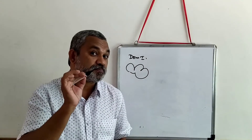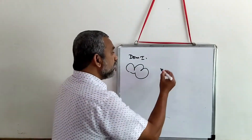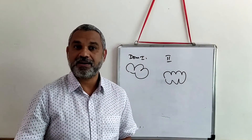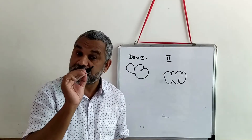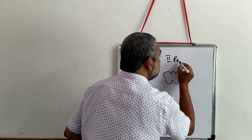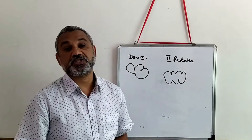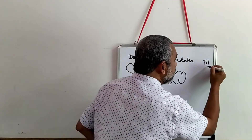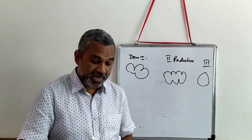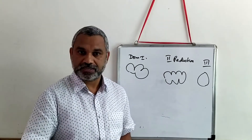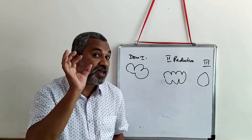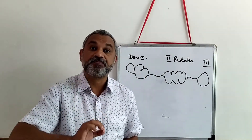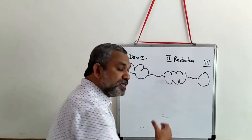Domain number one has three enzymes, and its function is to allow the substrate molecule to come in and condense them — so it is known as the substrate entry and condensation unit. Domain number two is made up of three enzymes and one protein, like ACP, and its function is reduction of the substrate molecule. Domain number three is made up of only one enzyme, and that domain is known as the palmitate release unit.